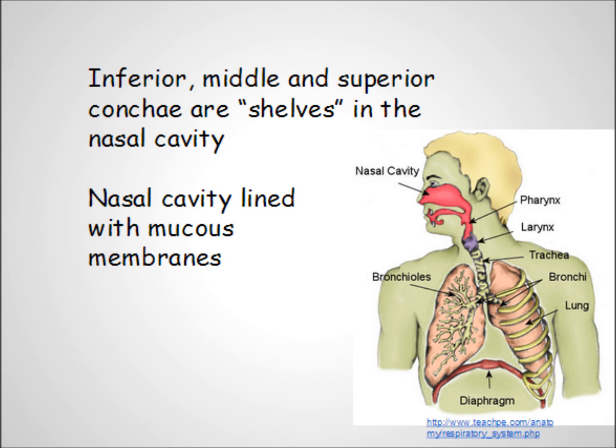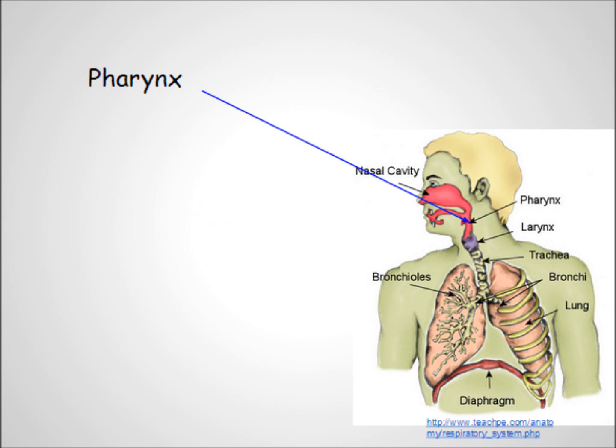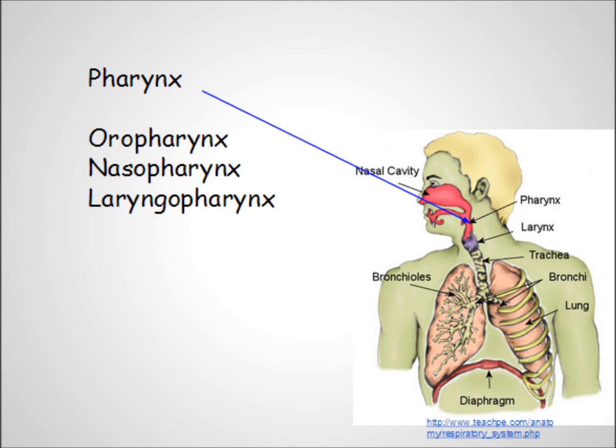If you've ever cleaned out a wood stove and then blown your nose, you've seen how well the nose can trap unwanted debris in the air. The oral cavity, or mouth, and the nasal cavity end at the pharynx. The pharynx, also known simply as the throat, is divided into the nasopharynx, the oropharynx, and the laryngopharynx.